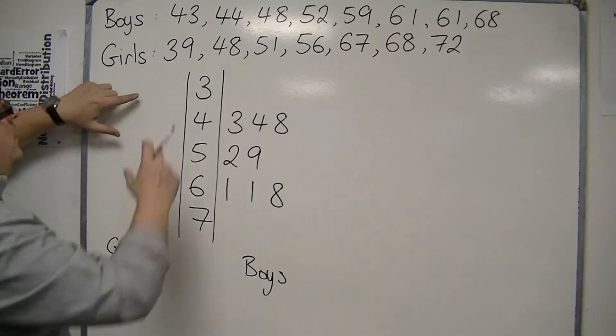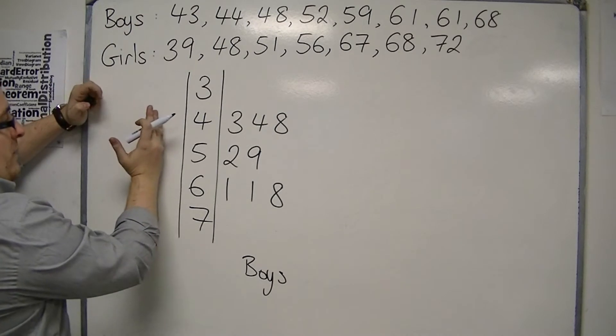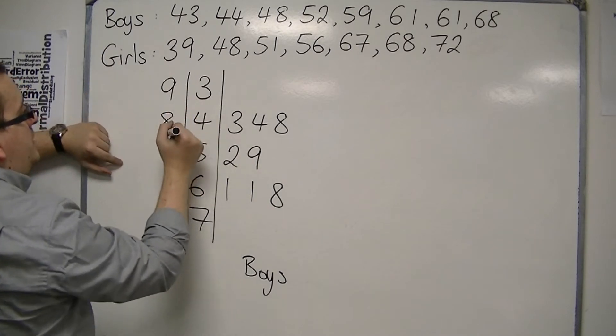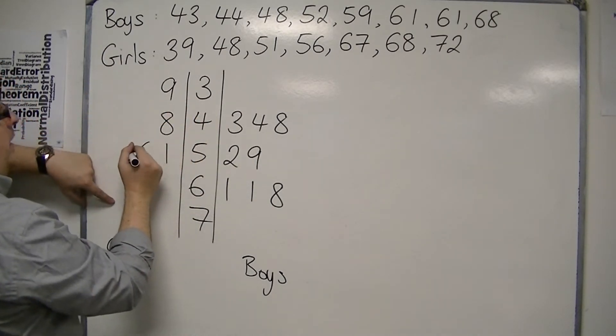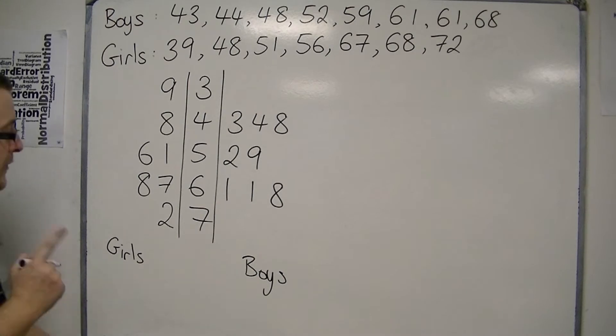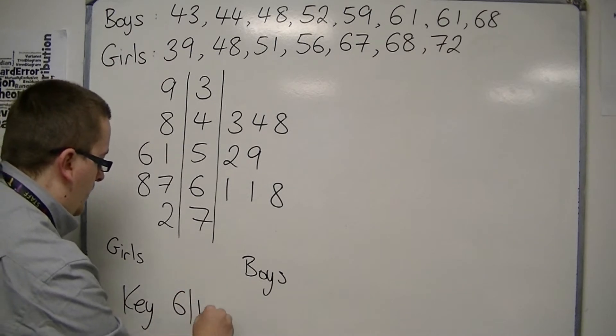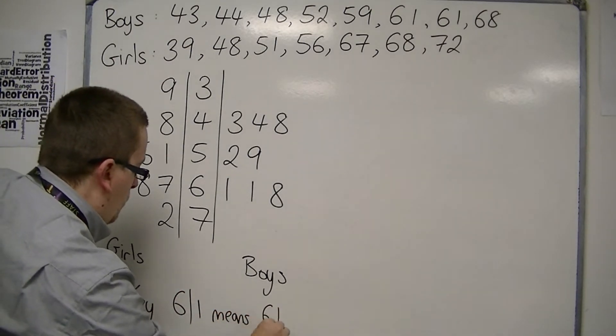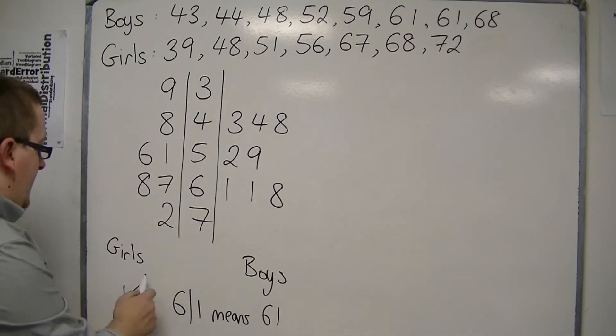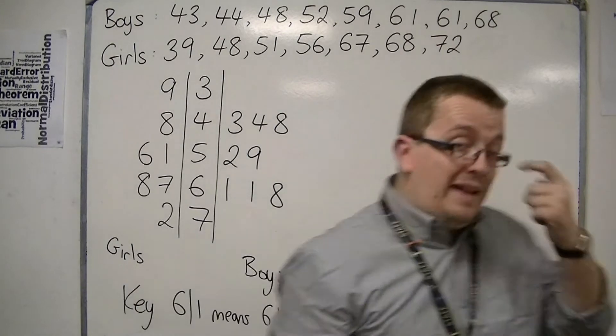Then I've got the girls. Now, notice how for the boys I work from left to right. When I'm on the other side of the stem and leaf diagram, I work from right to left. So I've got 39, 48, 51, 56, and then 67, 68, and 72. And so the key that would go with this could say that 6 vertical line 1 means 61. And you only really need one key for the whole set of data. So here is my back-to-back stem and leaf diagram.